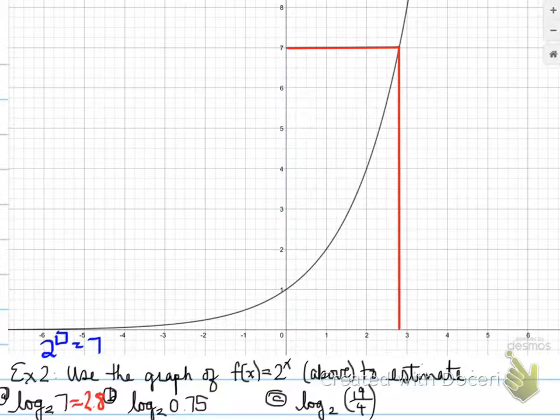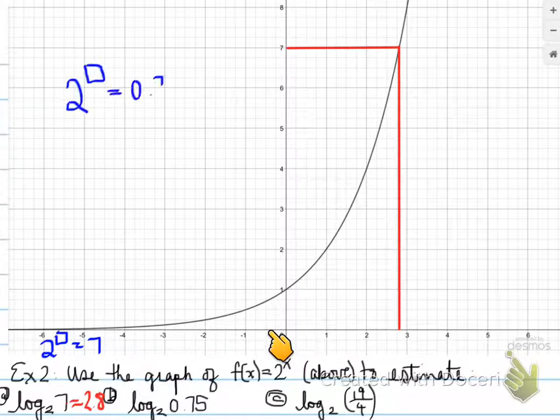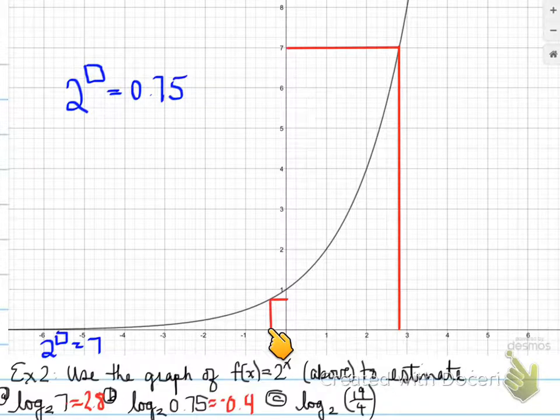The next one, we're looking here, using the 2 to the x graph, 2 to the power of something is equal to 0.75. So we need to find 0.75 over here, go across to the graph, and we see it's approximately somewhere in this range, close to this number, but not exactly. It's like halfway between here and here, so we're looking at a value of approximately negative 0.4, okay? Not exactly negative 0.5, negative 0.4, somewhere in that range.